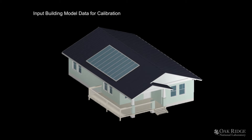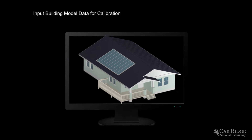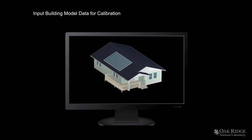The AutoTune software developed at Oak Ridge National Laboratory calibrates energy models of buildings to measured data. By taking a software description of a building, which can be defined by the AutoTune website, users can easily create a model of their own building.